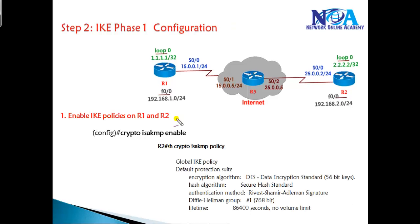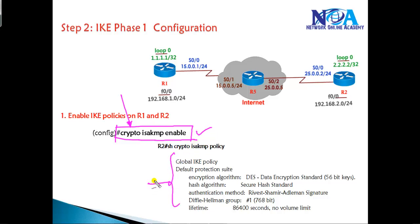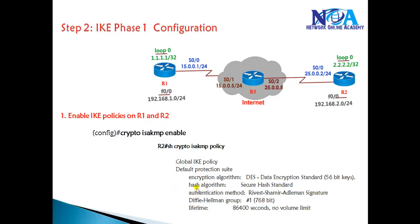The first step is to enable IKE on the router using the command: crypto isakmp enable. If you don't find this command on your IOS, you may need to upgrade your IOS, but most IOS versions support it. Once you enable this command, it creates a default ISAKMP policy which uses some default encryption method, default hashing algorithm, and default Diffie-Hellman group.